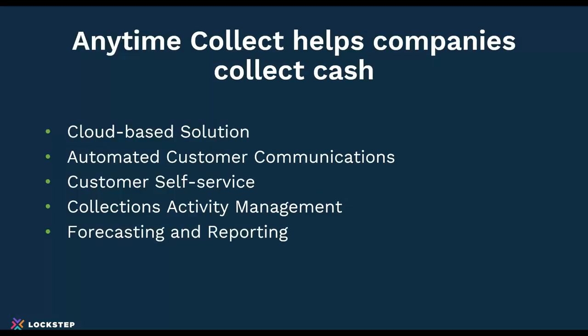Lockstep makes a product called Anytime Collect, and it basically helps companies collect cash faster. It does that in five specific ways. First, it's a cloud-based solution, so it supports a remote work environment. We also automate customer communications around the aging of invoices, so as things come due, reminders are sent out — dunning and that kind of information.